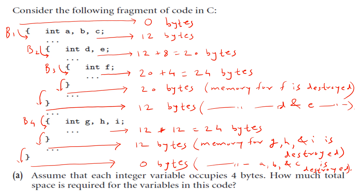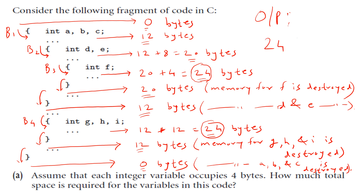Now the question is, how much total space is required for the variables in this code? You realize that memory allocated at various points is: 0, 12, 20, 24, 20, 12, 24, 12, and zero. So at any given point in time, the largest memory required by this code is 24 bytes. Hence the total memory required for the variables in this code is 24 bytes. I hope you have understood. Thank you.